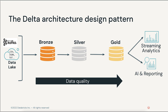The Delta Lake architecture is a vast improvement upon the traditional Lambda architecture. At each stage, we enrich our data through a unified pipeline that allows us to combine batch and streaming workflows through a shared file store with ACID-compliant transactions. Each stage can be configured as a batch or streaming job, and atomic transactions ensure they succeed or fail completely. The end outputs are actionable insights, dashboards, and reports of business metrics. By considering business logic at all steps of the ETL pipeline, we can ensure storage and compute costs are optimized by reducing unnecessary duplication and limiting ad hoc querying against full historical data.